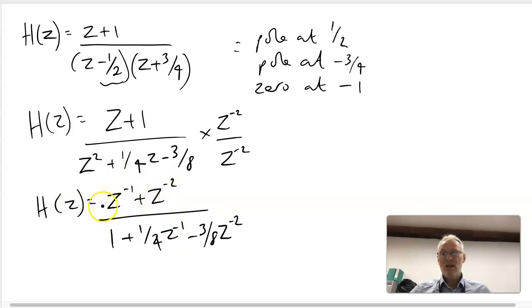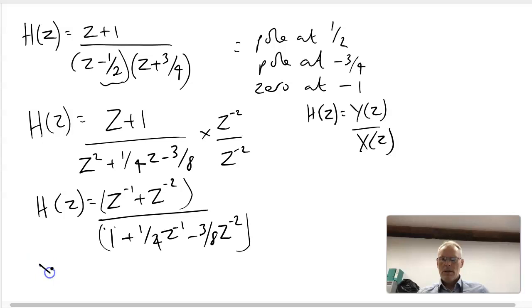Now what we have is an expression in terms of Z but raised to the negative indices, and these would represent the delays in our difference equation. If you remember, H(Z) equals Y(Z) over X(Z). We will end up with all these are the Y terms here, all these are the X(Z) terms here.